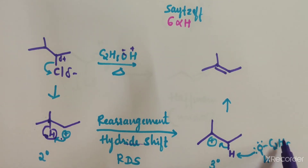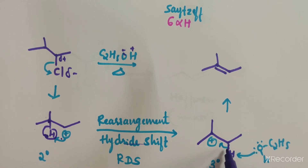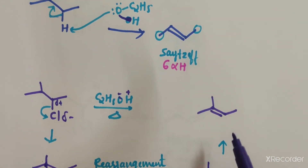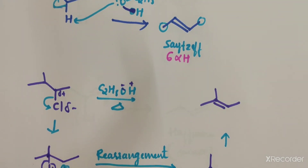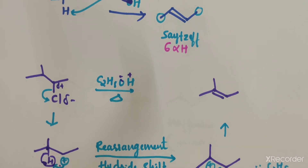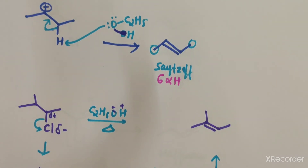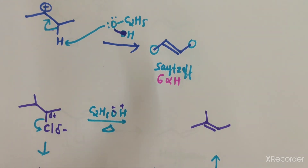Then we add ethanol again. The oxygen with its lone pair of electrons abstracts the beta hydrogen, the charge is neutralized, and the electrons shift to form the final product — a stable alkene. An important point: if heating and weak base are present, it will be an E1 elimination reaction.